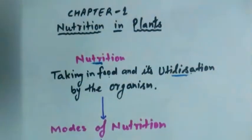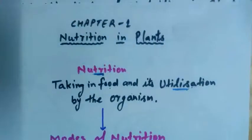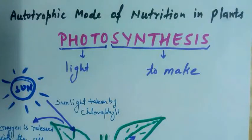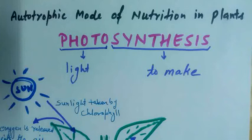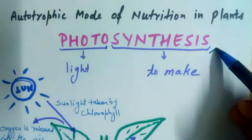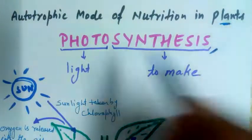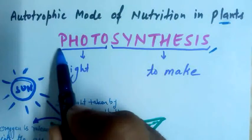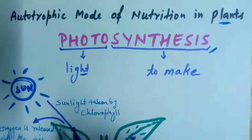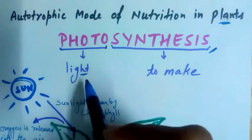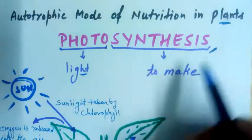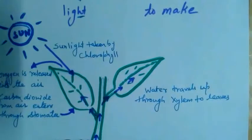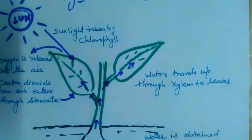Now, moving to the next topic: autotrophic mode of nutrition in plants, that is photosynthesis. The process of photosynthesis is carried out by plants. In the word 'photosynthesis', photo means light — it can be sunlight or any other form of light — and synthesis means to make. Now, with the help of a diagram, we will explain the process of photosynthesis.